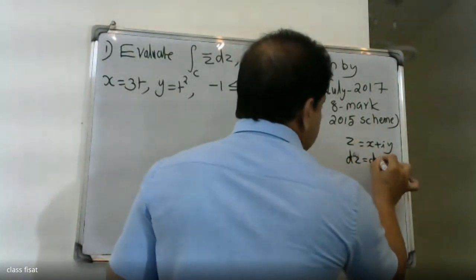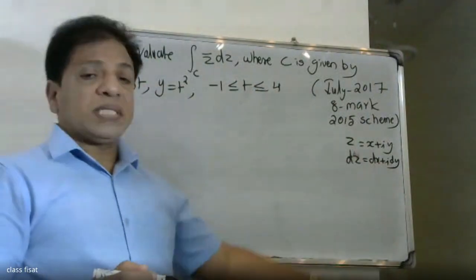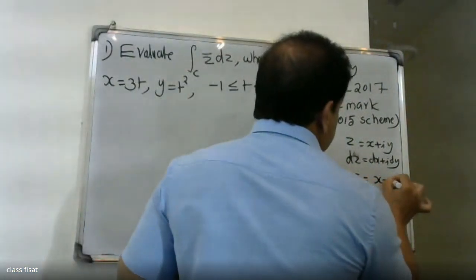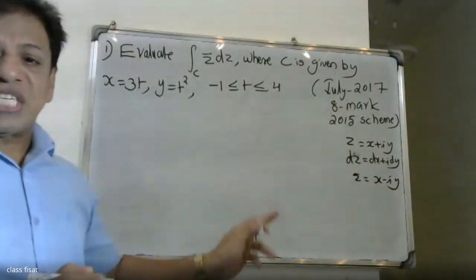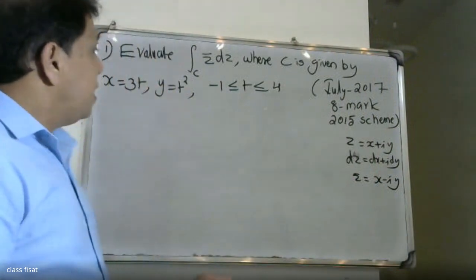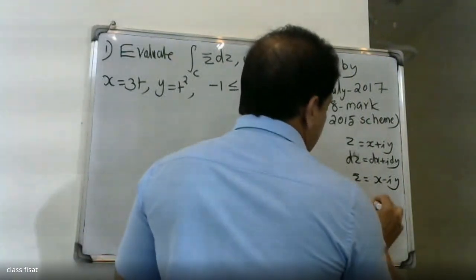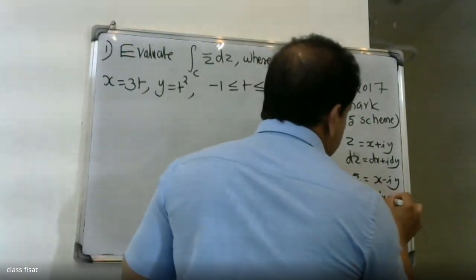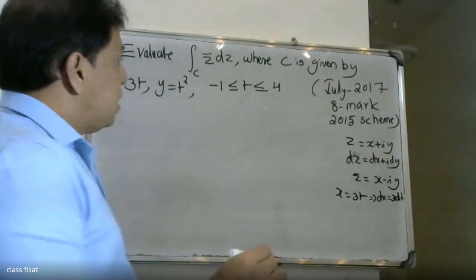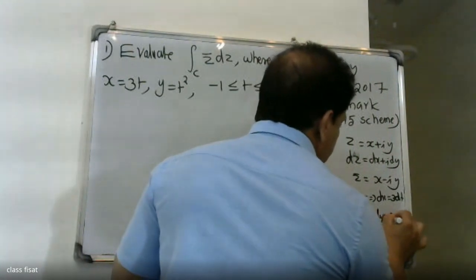The difference shows the expression x into y. dz is equal to dx plus i·dy. If we go to dx plus dy — where x equals 3t, then dx equals 3·dt; and y equals t squared, then dy equals 2t·dt.